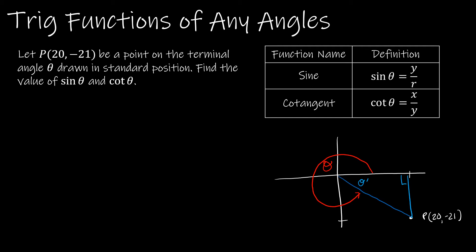What do I need? I need y and r. 20 is x and -21 is y, so I need to find r, which is the hypotenuse. I can say 20 squared plus 21 squared equals r squared. So 20 squared is 400, 21 squared is 441, equals r squared. 841 equals r squared, and when I take the square root I get plus or minus 29.